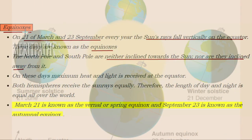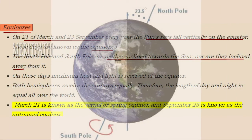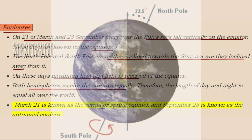Next let's study about equinox. On 21st March and 23rd September every year, sun rays fall directly on the equator, and those days are known as the equinox. During this time, neither the North Pole nor the South Pole is inclined towards or away from the sun. Both hemispheres receive equal amounts of sun rays, so the length of day and night is equal all over the world. March 21 is known as the vernal or spring equinox, and September 23 is known as the autumn equinox.